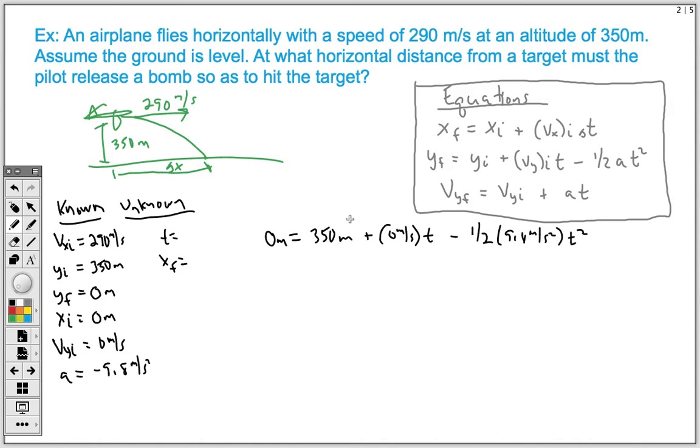Now at this point, it's just a means of doing the algebra, making sure that you are combining like terms, that you are not combining unlike terms. So we have zero meters is going to end up equaling 350 meters minus one-half of 9.8 is 4.9 meters per second squared.